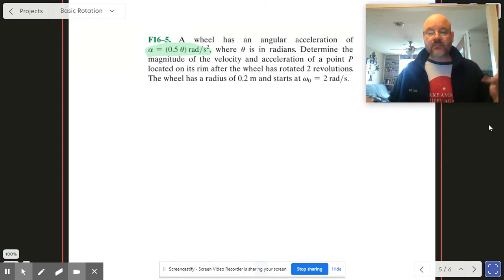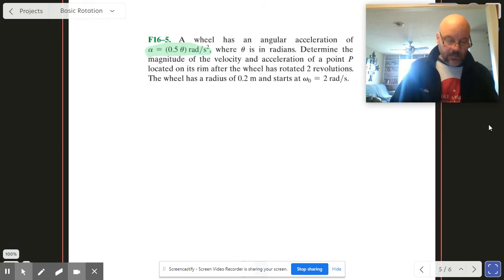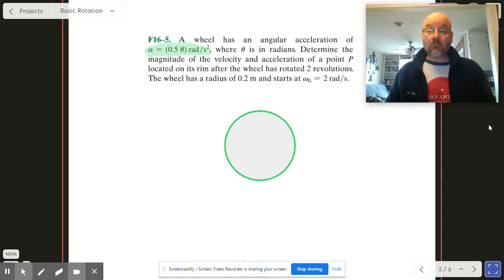OK, the wheel's got a certain radius, starts with a certain angular velocity, blah, blah, blah. OK, we should draw a picture on this. OK, let me see if I can do that. Not bad. OK, and then we have a certain radius for this thing out here like this. I'm just going to call it r.